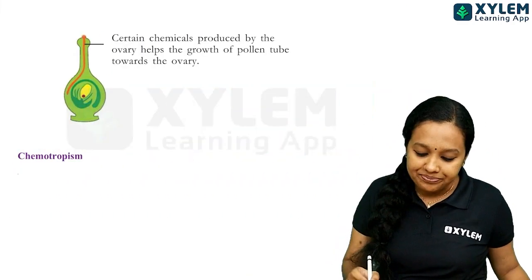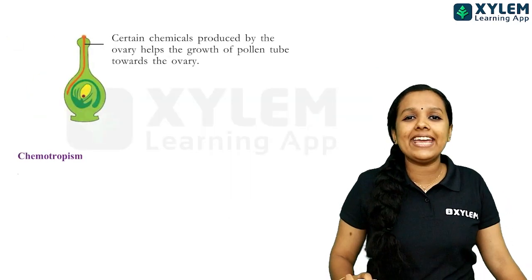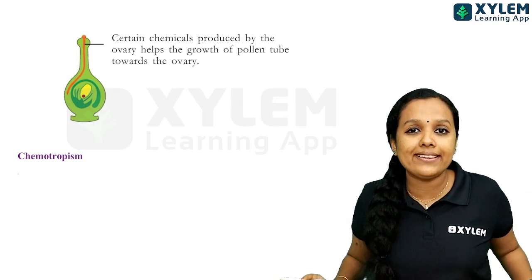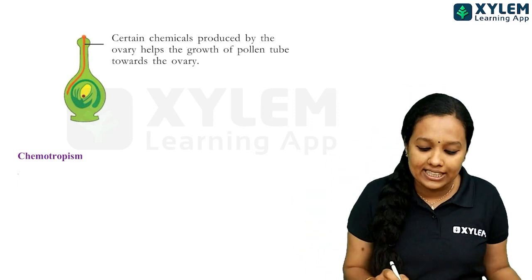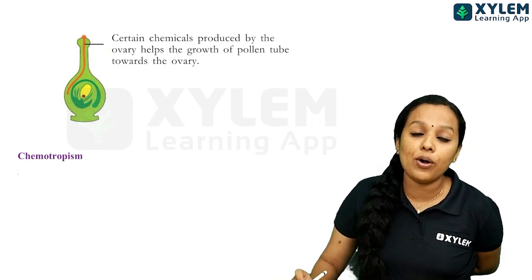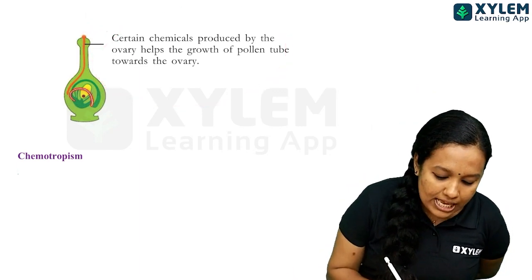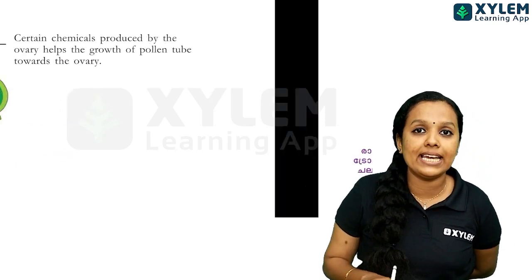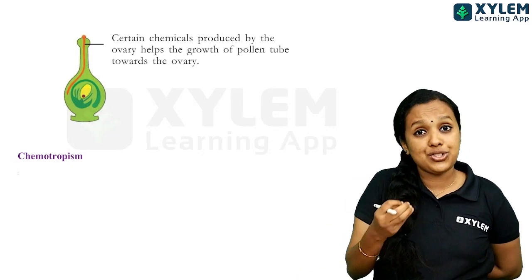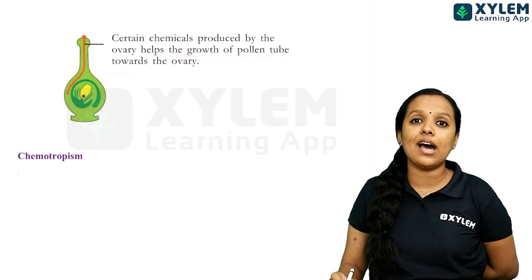Chemotropism. You already studied pollination. Here is the topic of pollination — how does the pollen tube grow? Certain chemicals are produced by the ovary. These chemicals cause the growth of the pollen tube towards the ovary.